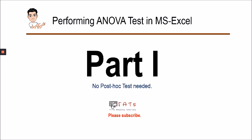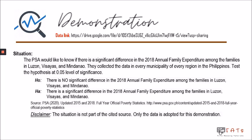Let's proceed with performing the ANOVA test using Microsoft Excel where no post hoc test is needed — let's call this Part One of the ANOVA test. In this demonstration, the Philippine Statistics Authority would like to know if there is a significant difference in the 2018 annual family expenditure among families in Luzon, Visayas, and Mindanao, collecting data from every municipality of every region. Our job is to test the hypothesis at the 0.05 level of significance. Note that the situation is not part of the cited source; only the data is adapted for this demonstration.